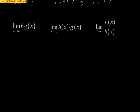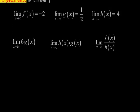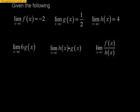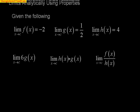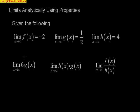Another type of analytical problem that we're going to look at is where I've given you the answers and you have to figure out the rest here. So it says given the following: that the limit of f of x is negative 2, the limit of g of x is 1 half, and the limit of h of x is 4.